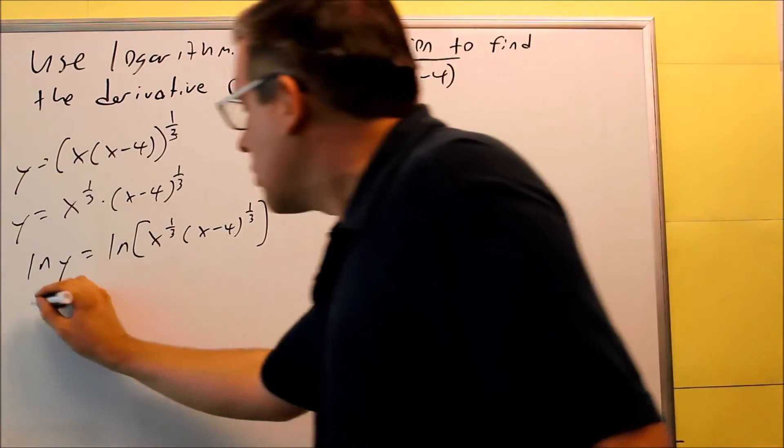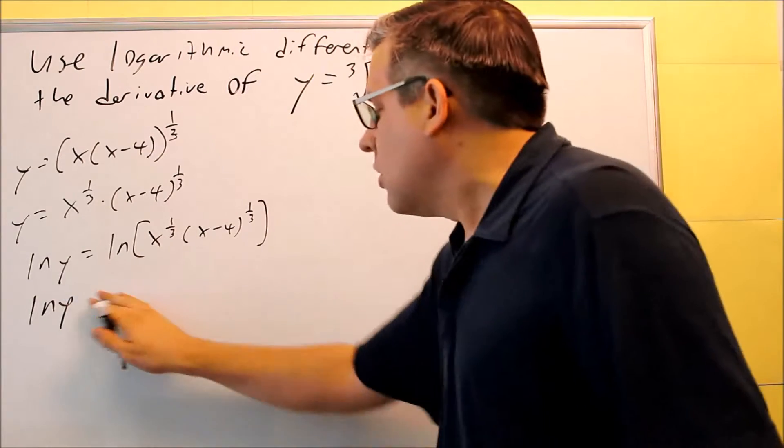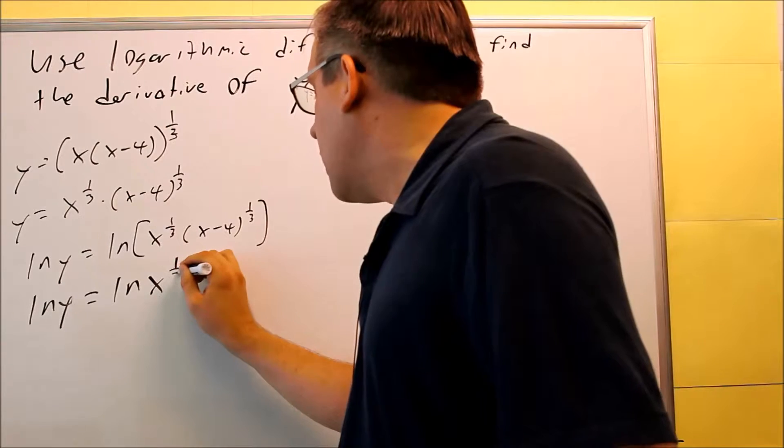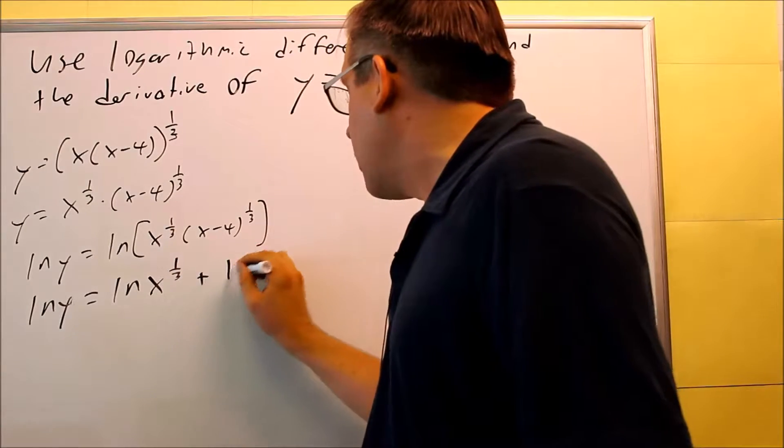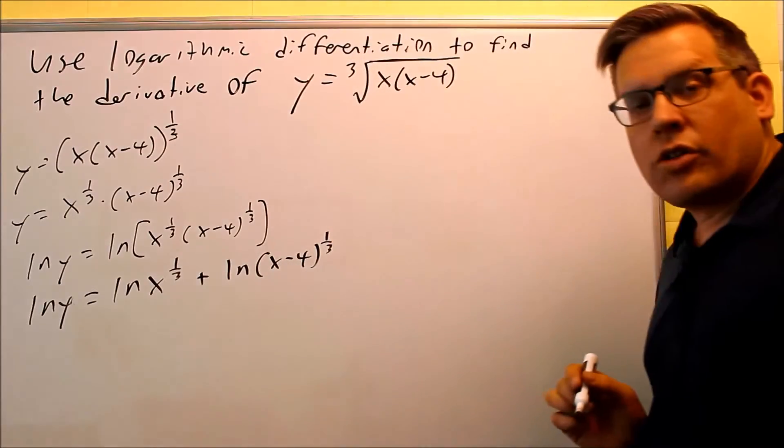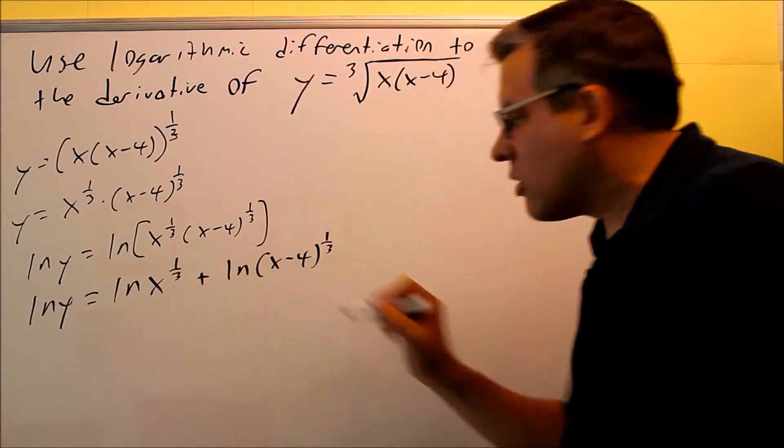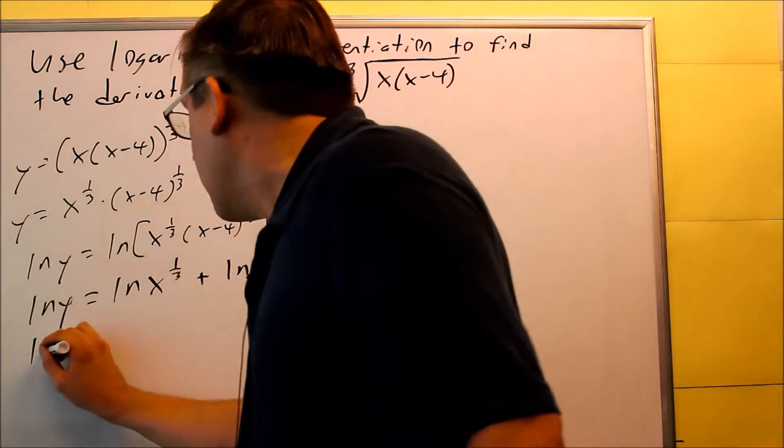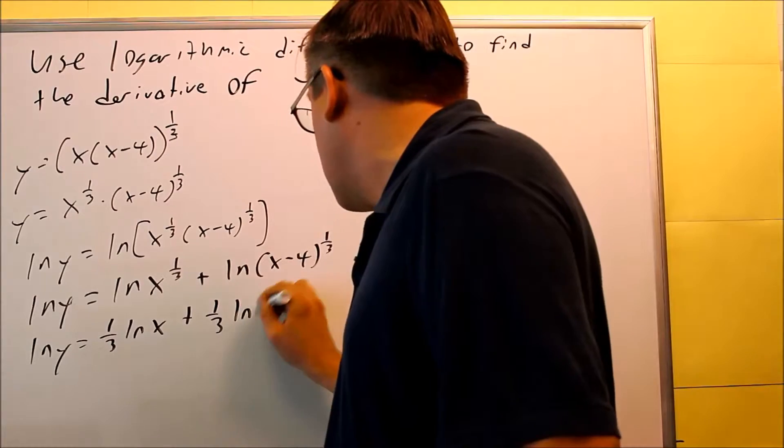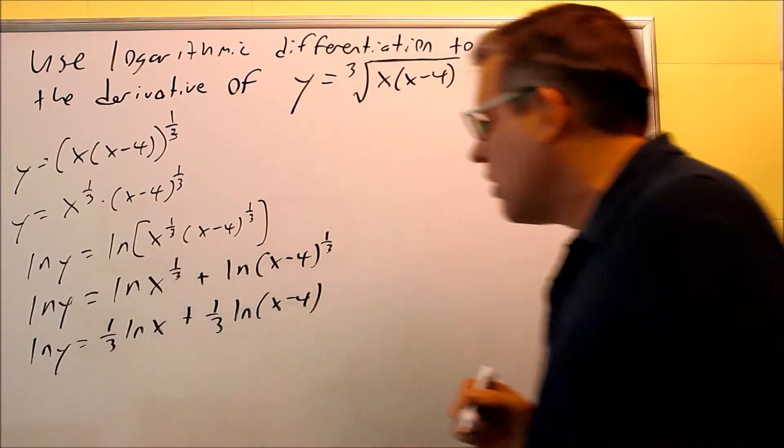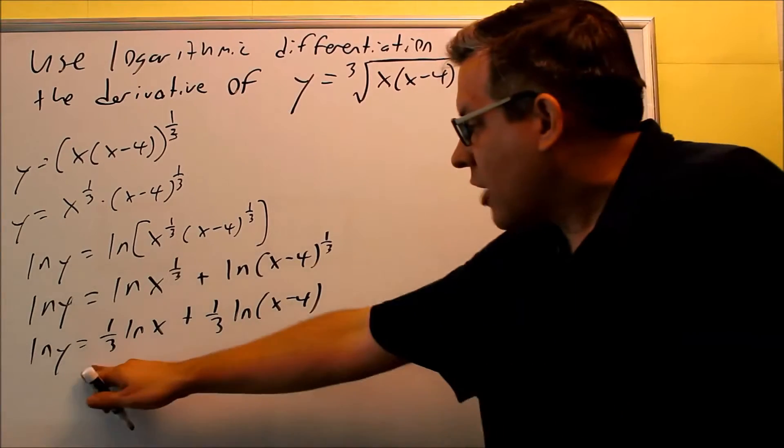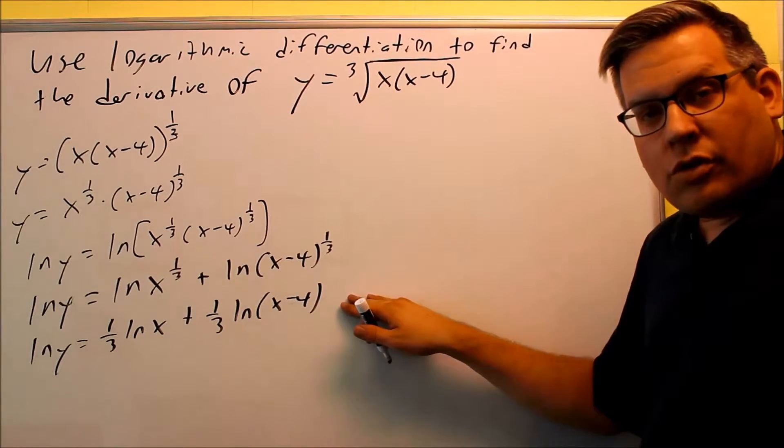But the nice thing about using natural log is natural log will allow us to break this up by using the powers. So I'm still going to keep this as ln y on this side. I could do natural log of x to the 1/3 plus natural log of (x - 4) to the 1/3, and I can bring the powers down in front by using log properties. So 1/3 natural log x plus 1/3 natural log (x - 4). I can bring the 1/3 down in front of both of those.